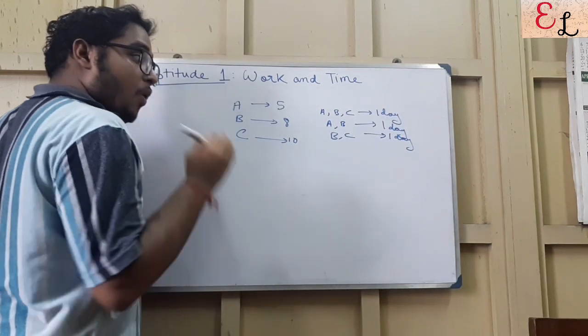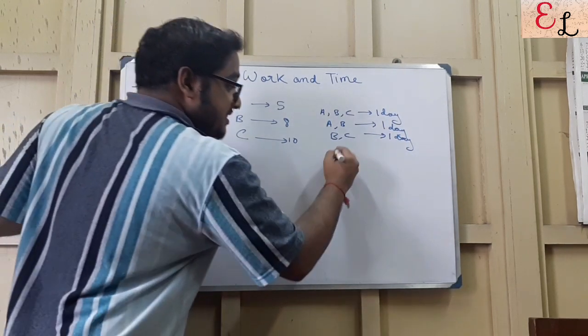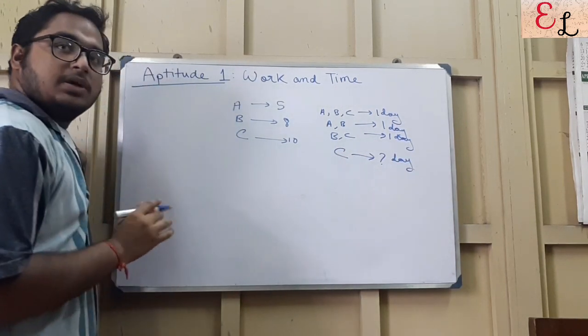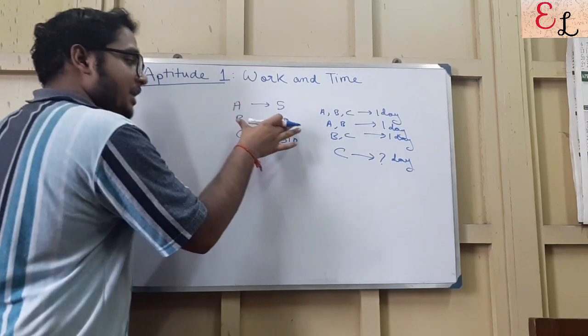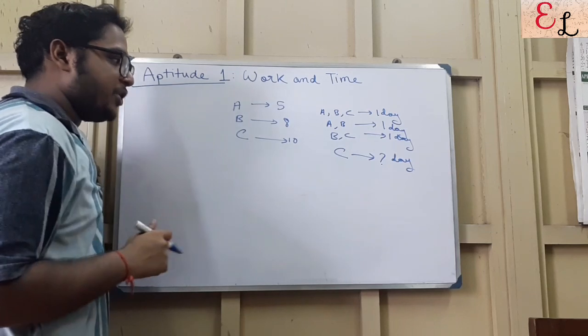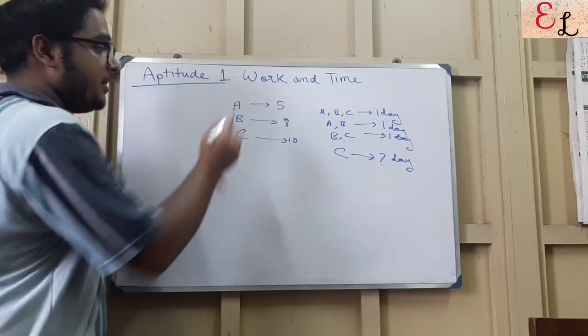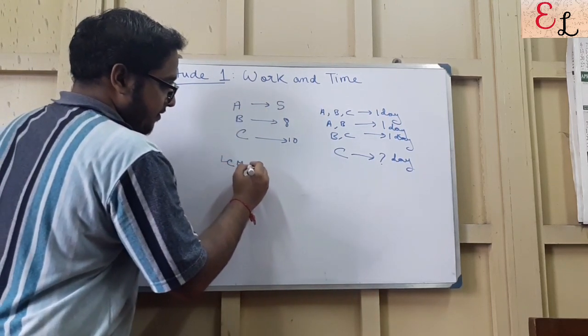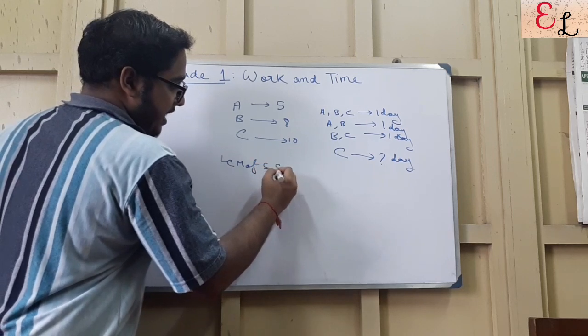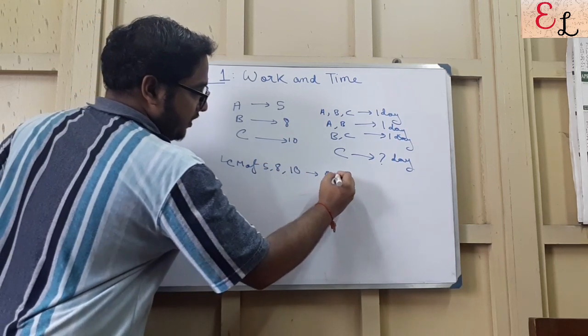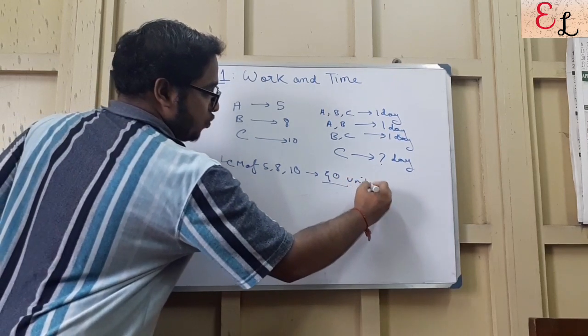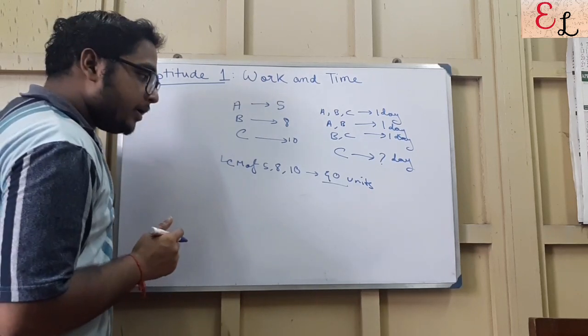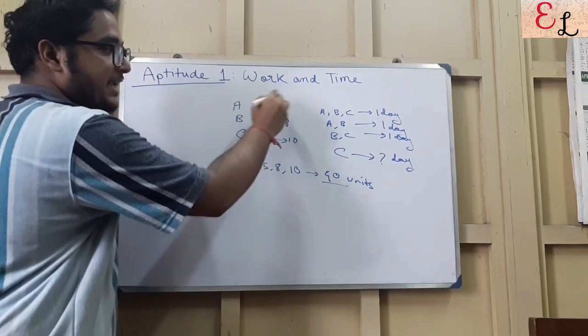Three days are done. How many more days will C require to complete the remaining work? This is one typically asked question from this section, work and time in quantitative aptitude. How will you solve it? As I have already said, take out the LCM. What is the LCM of 5, 8, and 10? It is 40. So 40 units of work, let us consider the total units of work as 40. How much work does A do in each day? A takes 5 days.